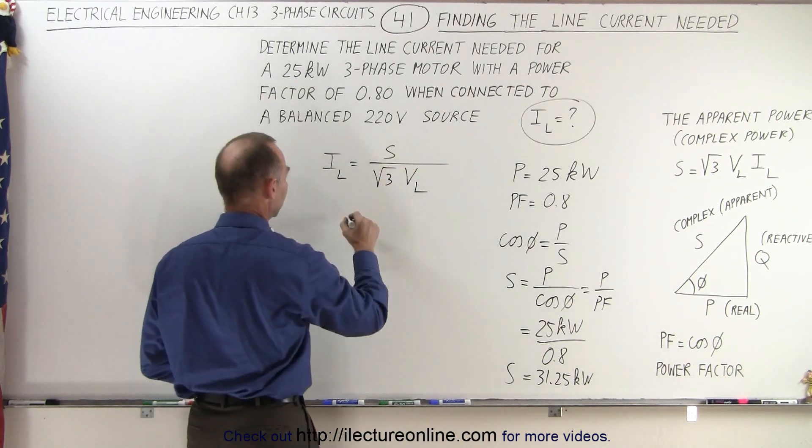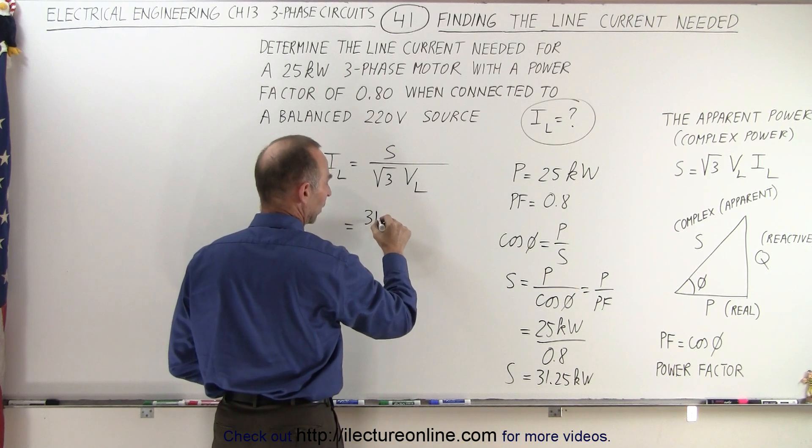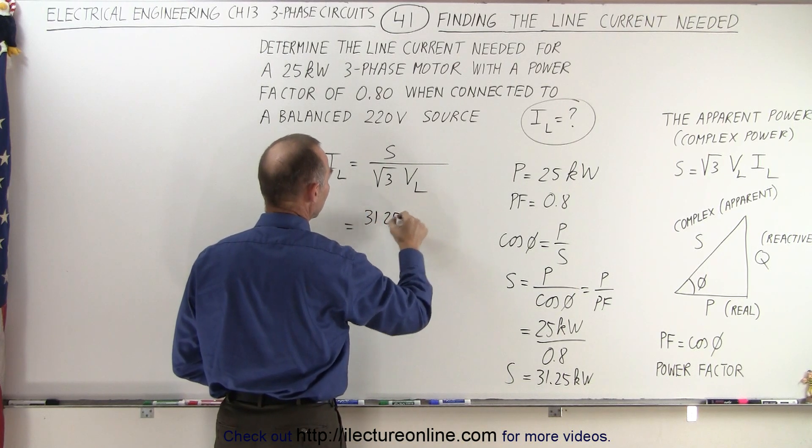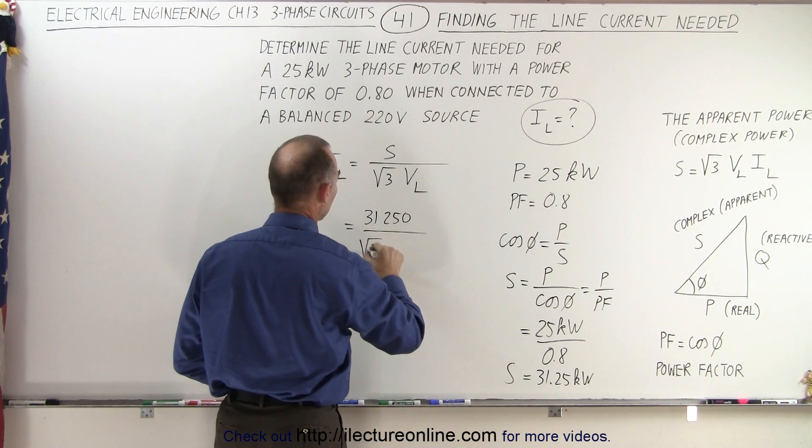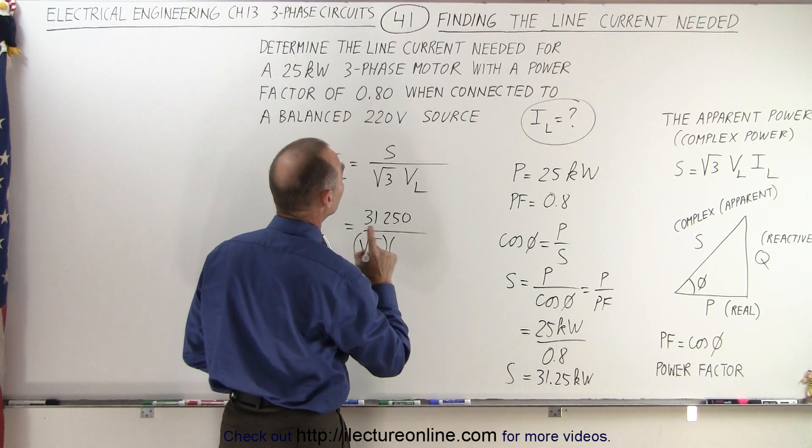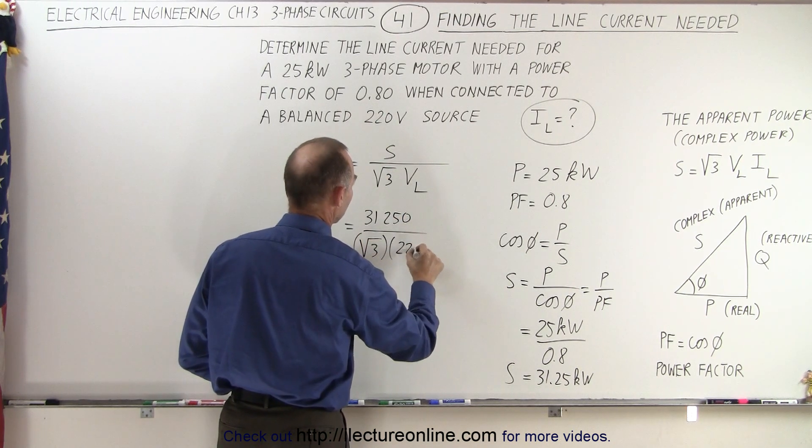So this is equal to 31,250 divided by the square root of three and divided by the line voltage of 220 volts.